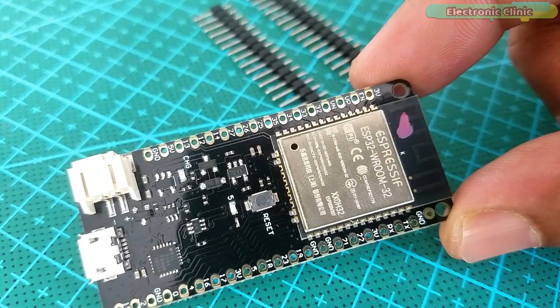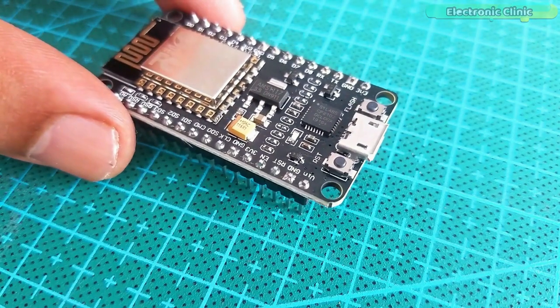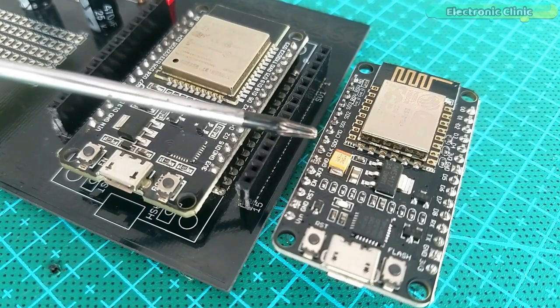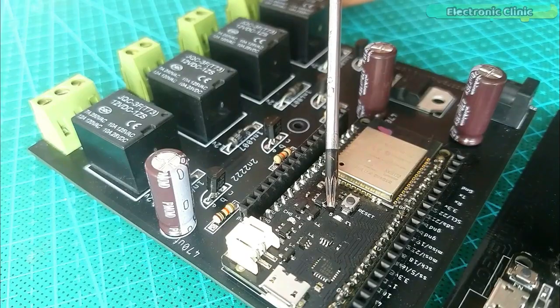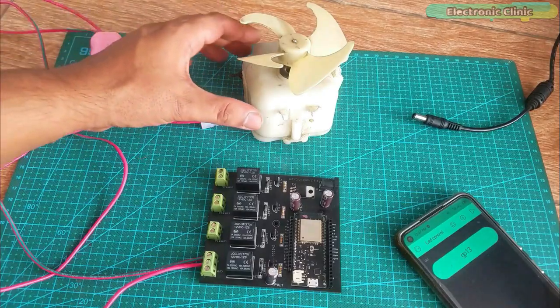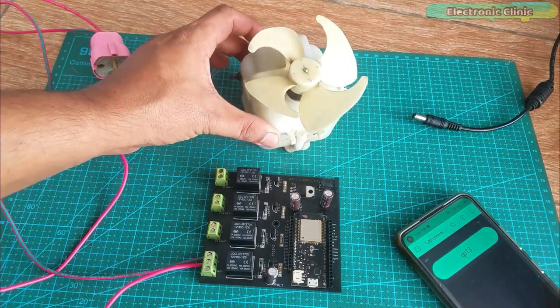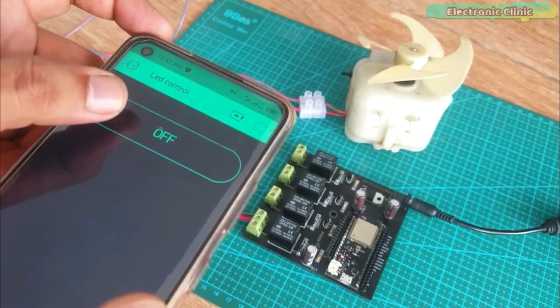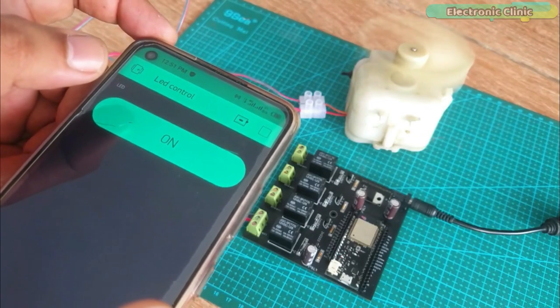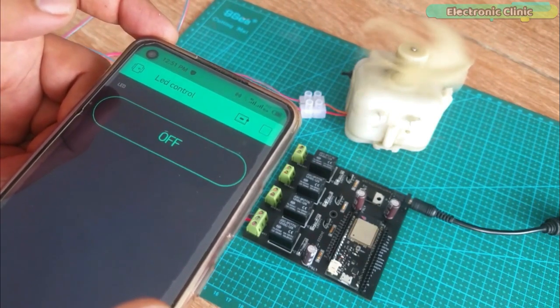You might have watched my videos on ESP32 and ESP8266. ESP32 and ESP8266 WiFi modules are 3.3 volt compatible controller boards and I have been using these controller boards in IoT based projects for controlling electrical devices from anywhere in the world using different IoT platforms including the Blink application, Thingspeak, and Ubidots.